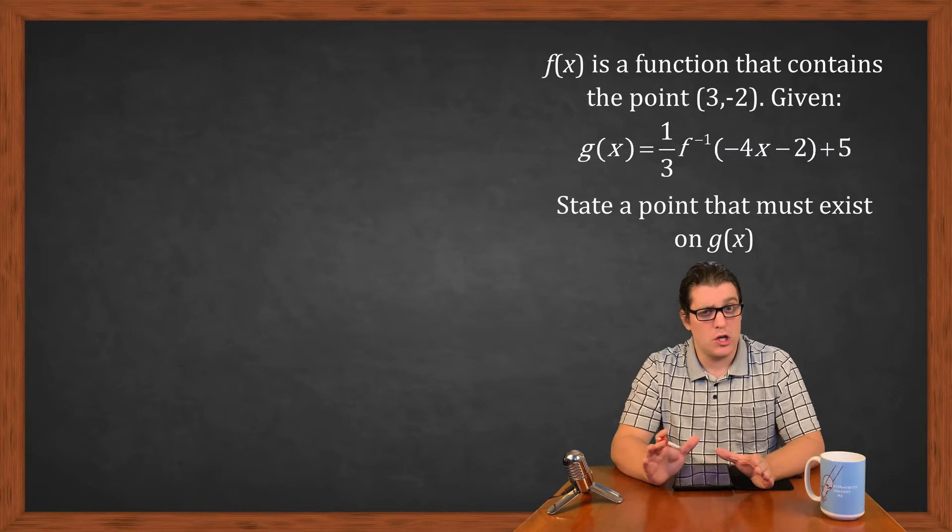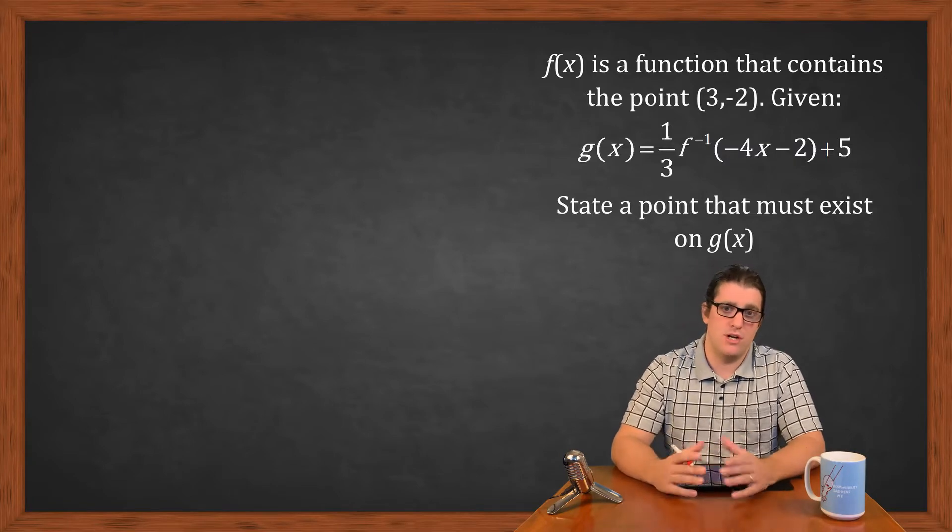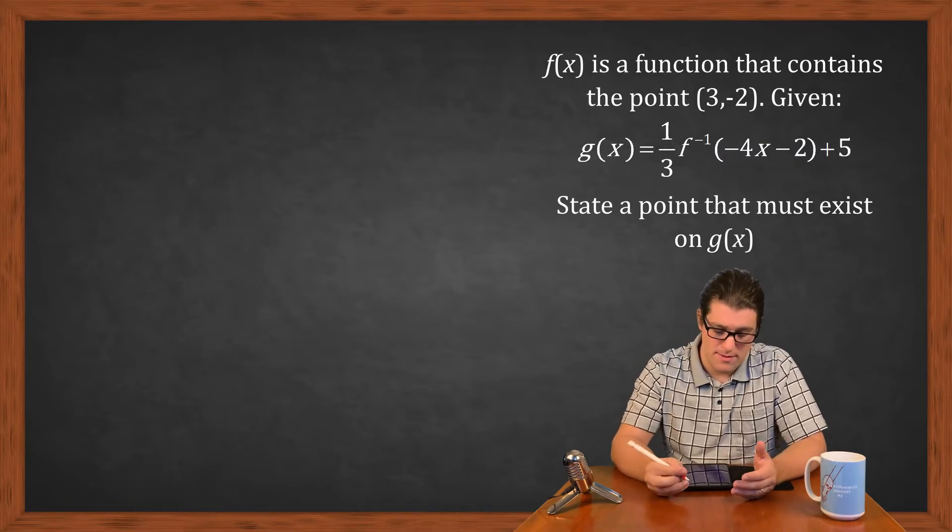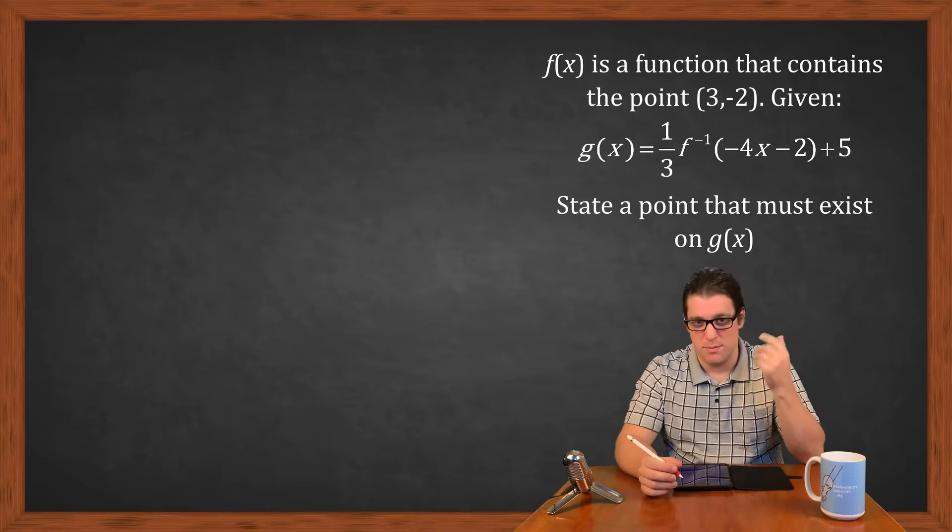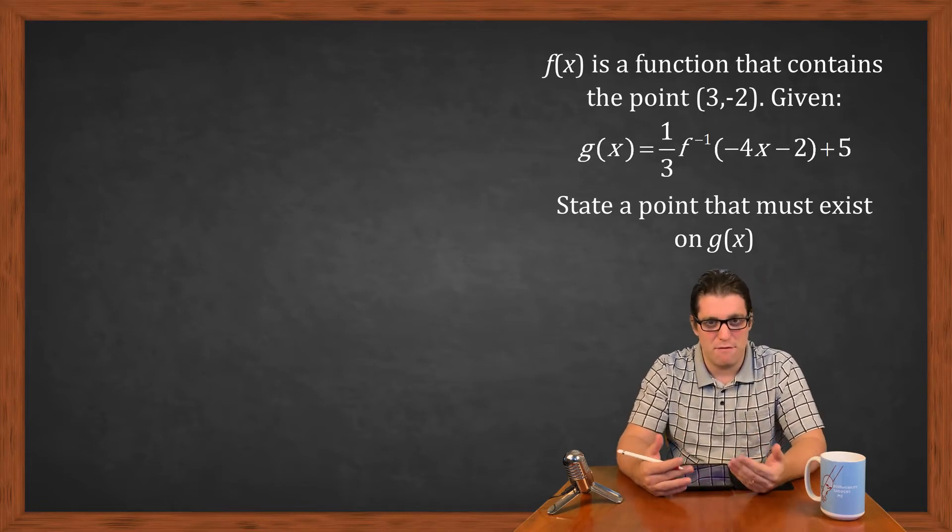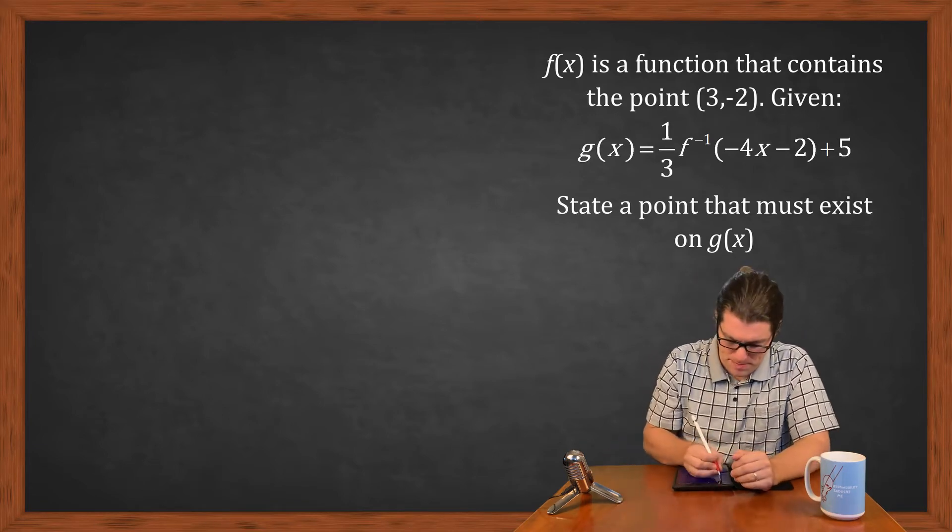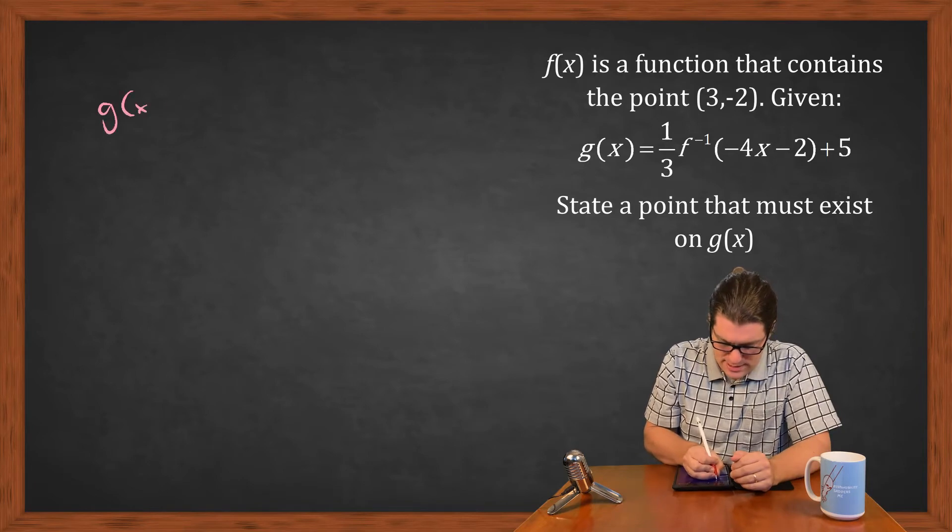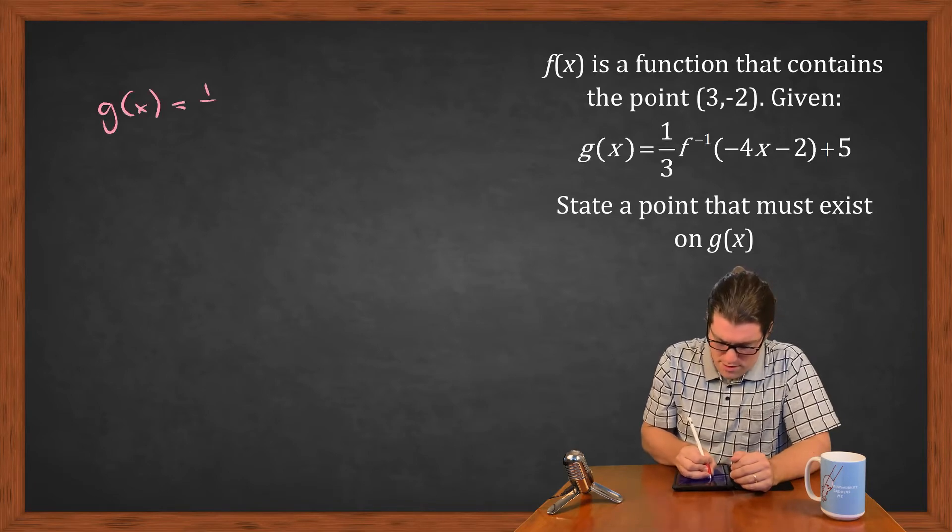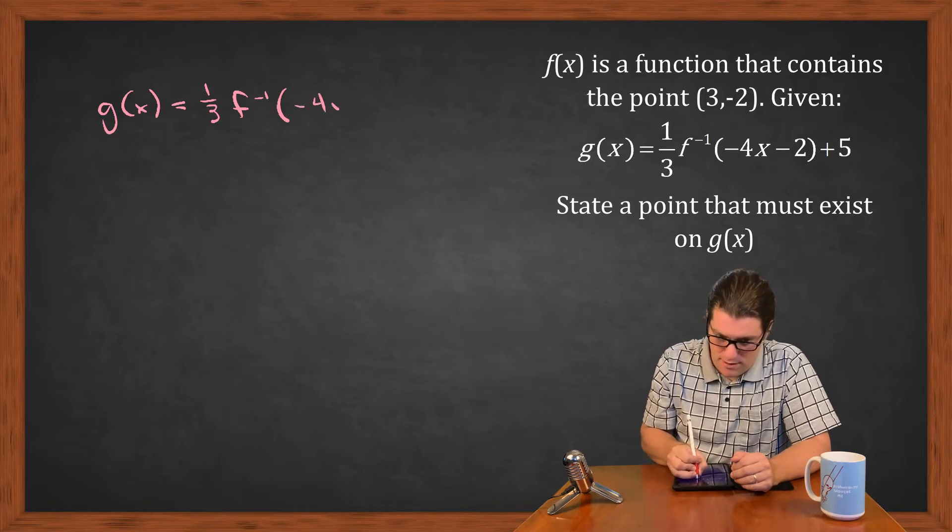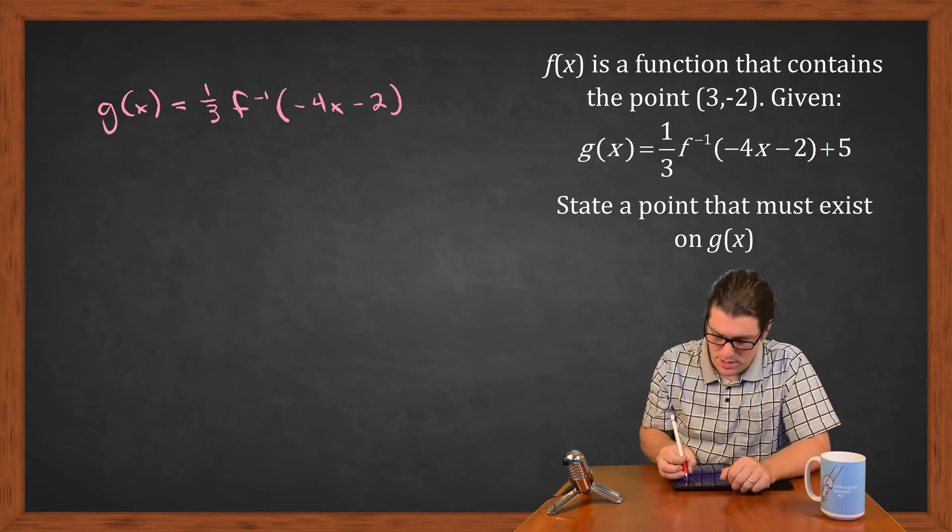All right, so it's kind of a nasty looking setup because the g(x) function isn't real pretty. So I'm going to copy it down even though it's above me because I like to have it in front of me as I go through it. So that is g(x) = (1/3)f^(-1)(-4x - 2) + 5.